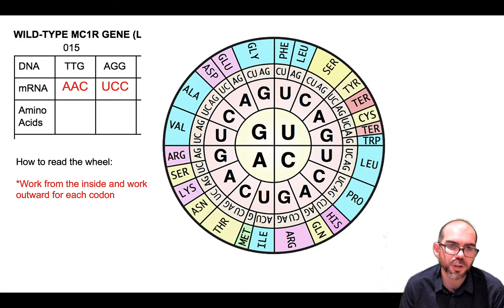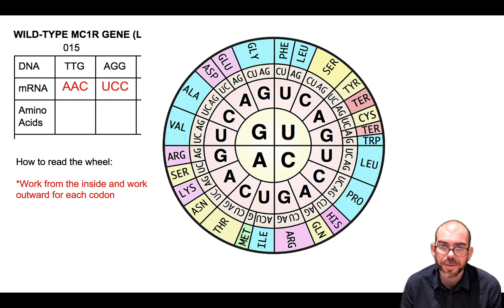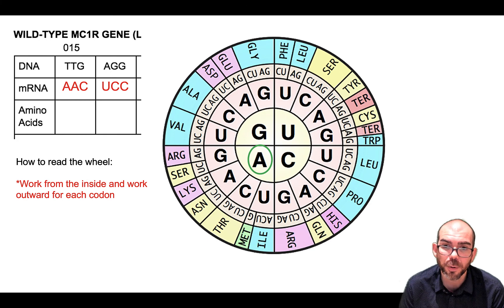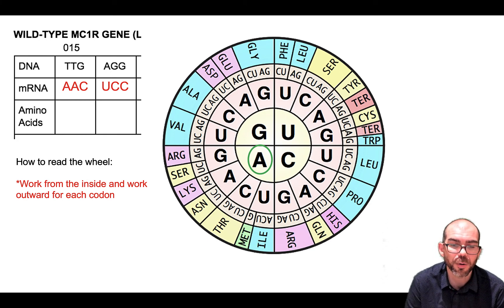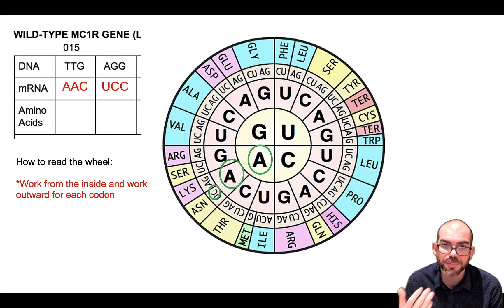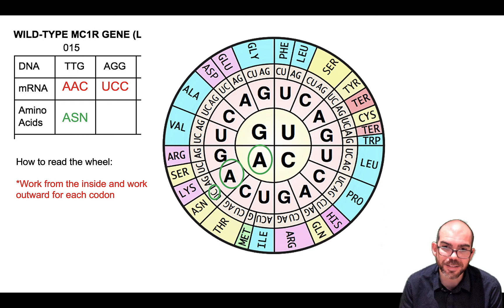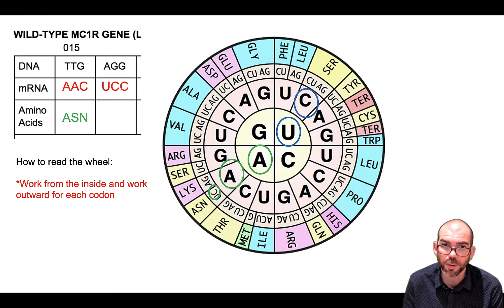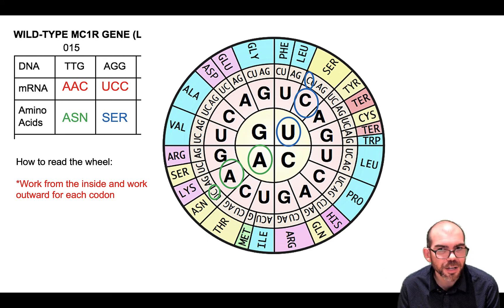The first tool you might use is the codon wheel. Let's start with the mRNA codon AAC. To use the wheel, I start in the middle — my first letter in my codon is A, so I start with A in the middle. You then work your way out: my next letter is A, and the final letter is C. Going from the inside out, AAC codes for ASN. Let's do that again for UCC — starting in the middle and working my way out, serine is the amino acid that will be produced.